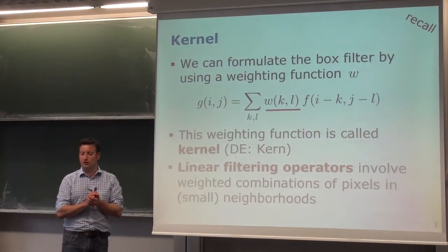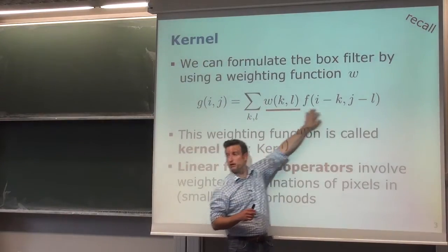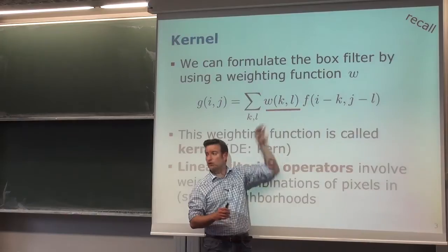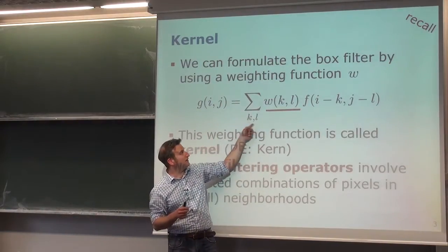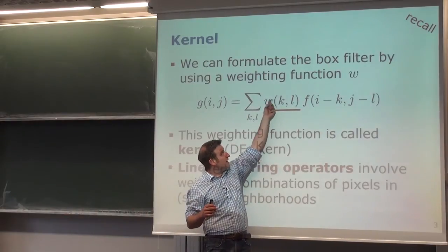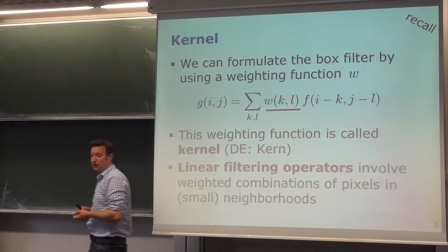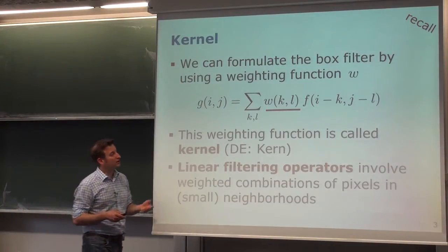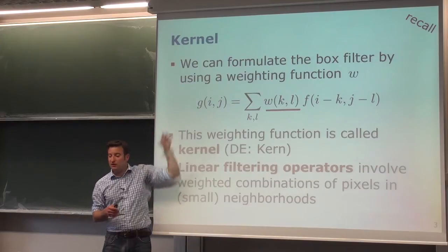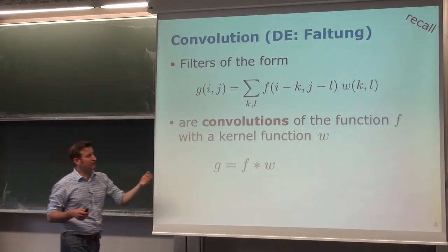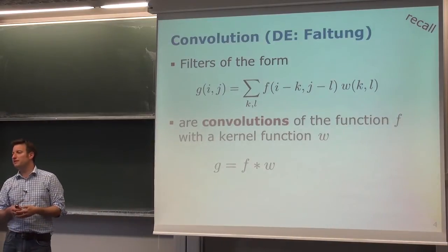We formulated these operators using a kernel function w. This kernel is used so that the input image f is convolved with w to produce the output image. The kernel has a certain size, typically centered around zero, and we sum over all values in the non-zero region — multiplying each kernel value with the input — to generate different types of local operators. This concept is a convolution, expressed as f convolved with w.